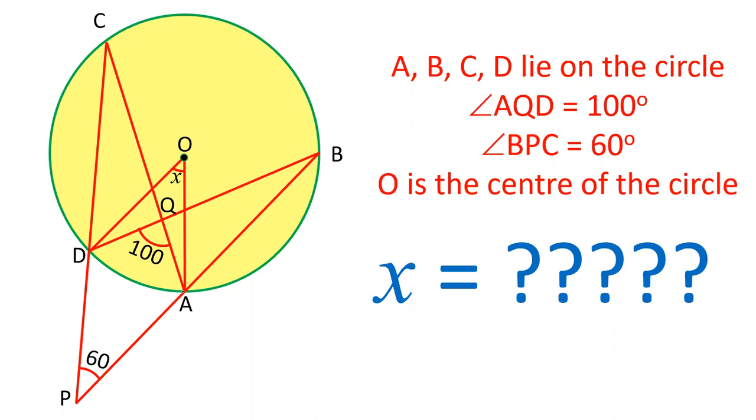Also it is given that AC and BD intersect at point Q. Angle AQD is 100 degrees. We have to calculate the value of this angle, angle AOD, that is X. Let's see how we can solve this question.